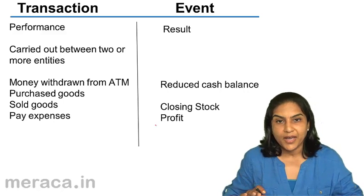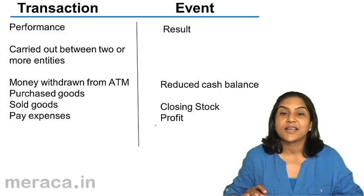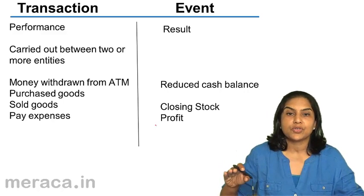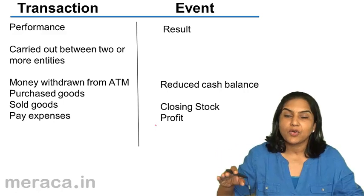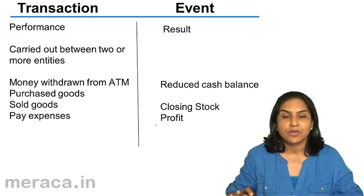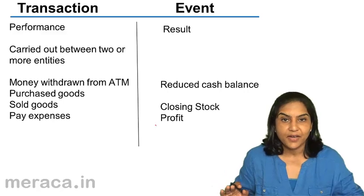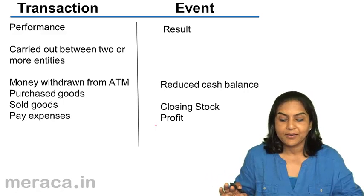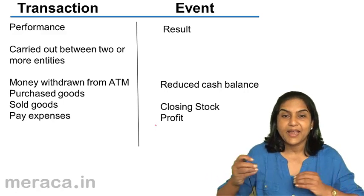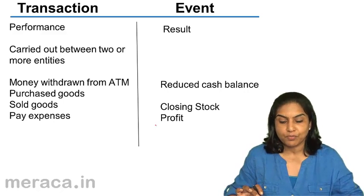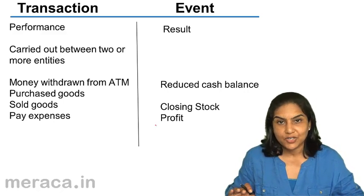As a result, the stock of goods in the godown of the seller comes down. So the reduction in the stock is an event, but the buying and selling — the purchase and sale transaction which took place — that was the transaction.